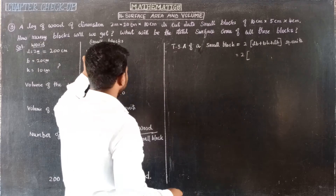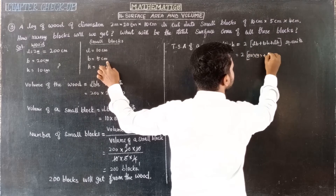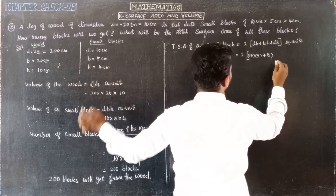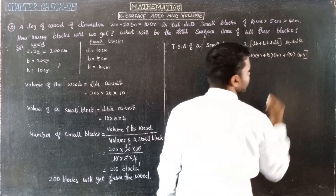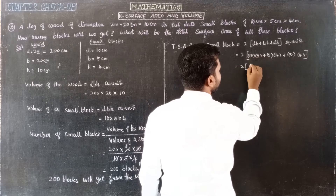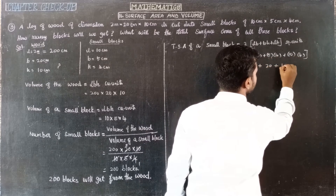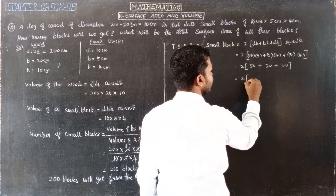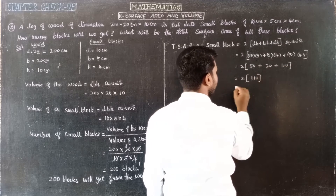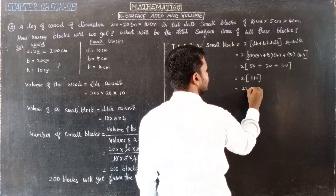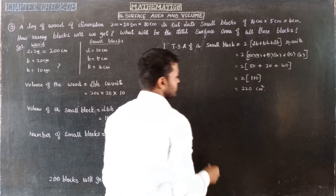Total surface area of one small block: 2 × (10×5 + 5×4 + 10×4) = 2 × (50 + 20 + 40) = 2 × 110 = 220 centimeters squared. This is the total surface area of one small block.